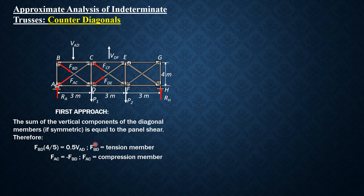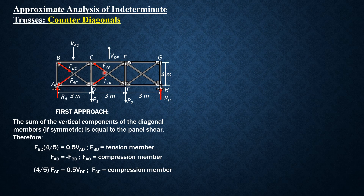The only difference is that the force in BD is tension while the force in AC is compression. Then proceeding to the second panel: the vertical component of CF is equated to half the panel shear, which is 0.5 of shear DF. CF is in compression and DE is in tension, and they have the same magnitude of force.